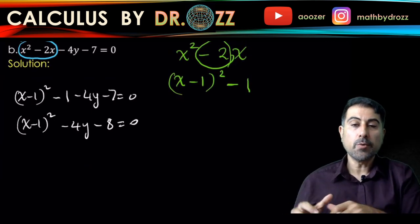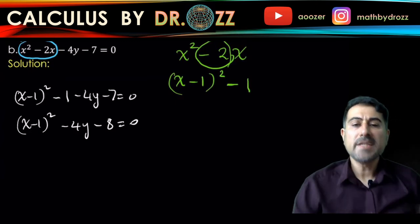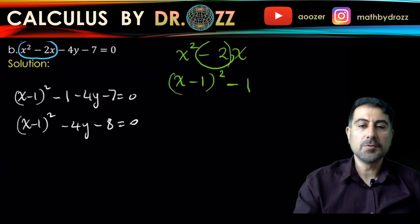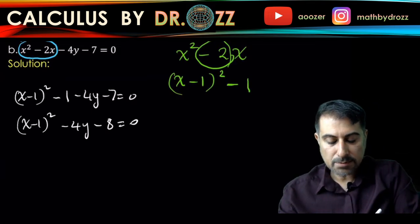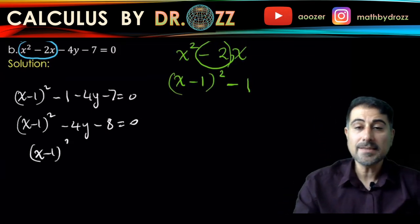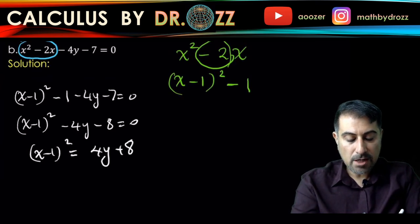Let's simplify this: minus 4y minus 8 equals 0. Remember that the x term should be on one side of the equation and the y term should be on the other side. So why don't we add 4y plus 8 to both sides of the equation to get x minus 1 quantity squared equals 4y plus 8.